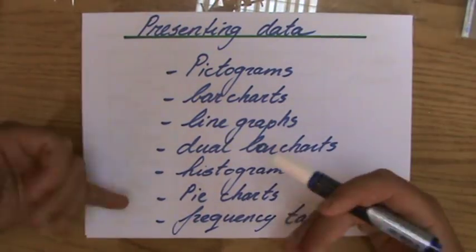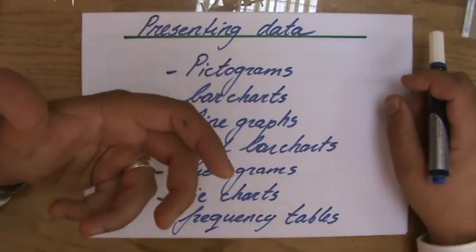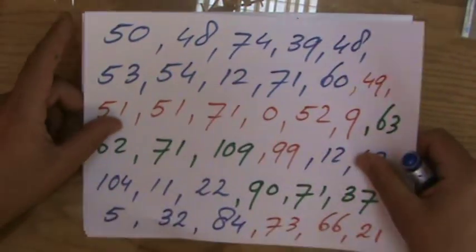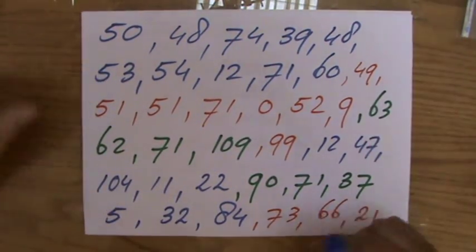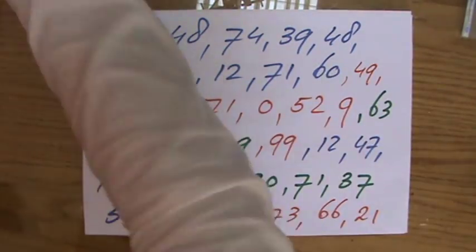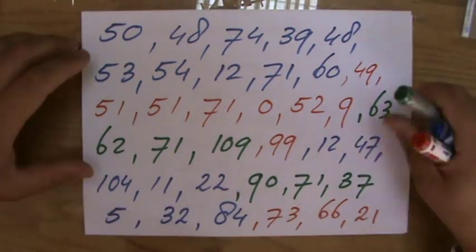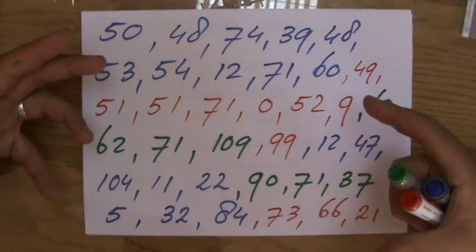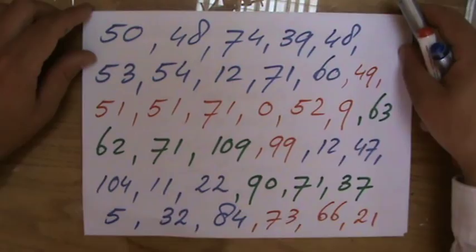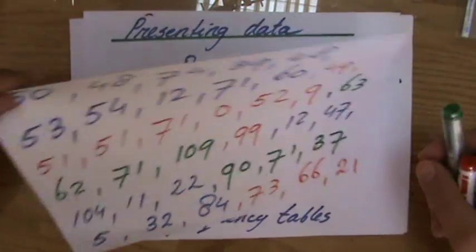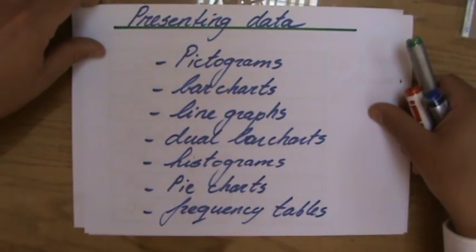There are probably more ways to present data. For instance, if I ask all my friends how much pocket money they receive — going around the class getting answers like 50, 48, and so on — I end up with a sheet full of numbers in different colors. Just looking at all those numbers is quite confusing and it's difficult to say anything really meaningful. That's why we present data in several different ways, so it's easier to interpret the situation.